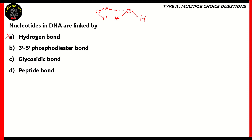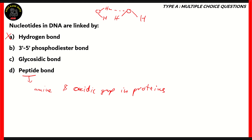If we look at option D, peptide bonds are found between the amine group and the acidic group in proteins. As we know, proteins are made up of amino acids. Amino acids contain an amine group at one end and an acidic group at the other end, so the amine group of one molecule binding with the acidic group of another is called the peptide bond. So option D is incorrect.